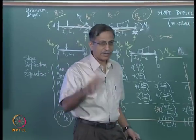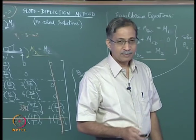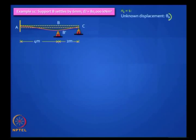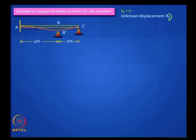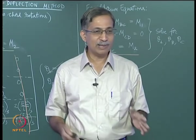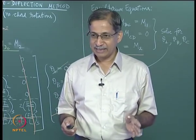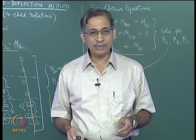Let us look at a problem with support settlement at B. What is the degree of indeterminacy here? It is 2 in the conventional sense, because theta B and theta C are unknown, but if you do it the smart way it is 1. We are talking about kinematic indeterminacy — forget all about static indeterminacy while doing displacement methods.